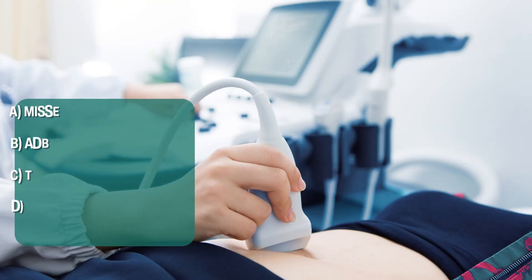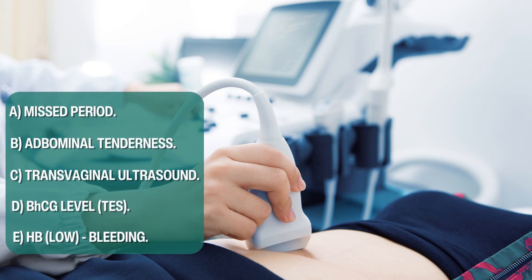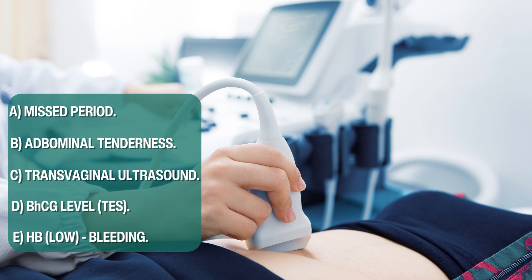When these symptoms develop, it is very important to suspect ectopic pregnancy and see your physician so that a proper diagnosis can be established. Diagnosis involves a history of a missed period, abdominal tenderness, and on transvaginal ultrasound an empty uterus with either a mass on the left or right or blood in the abdomen. A beta-hCG level that is low positive and a low hemoglobin indicate internal bleeding, which is an urgent situation requiring immediate attention.